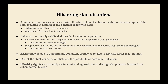Bullae are commonly subdivided by location of separation into epidermal and subepidermal blisters. Epidermal blisters result from separation of layers within the epidermis — because they have a thinner top, they're going to be flaccid and more fragile. Subepidermal blisters are due to separation of the epidermis and dermis at the basement membrane, so because they have a thicker dome, these bullae are tense and stronger. Blisters can be due to autoimmune conditions or physical forces like trauma, friction, heat, and burns.